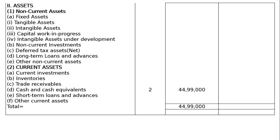In the asset side, we will have non-current assets first. Under this, A - fixed assets. Under fixed assets: 1 - tangible assets, 2 - intangible assets, 3 - capital work in progress (semi-constructed buildings, semi-installed machines), 4 - intangible assets under development, such as goodwill under development.